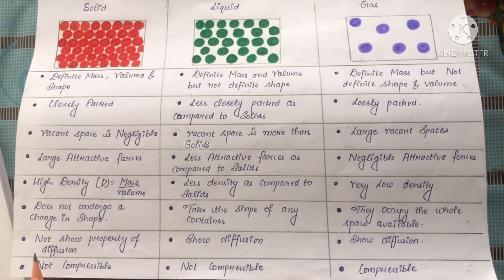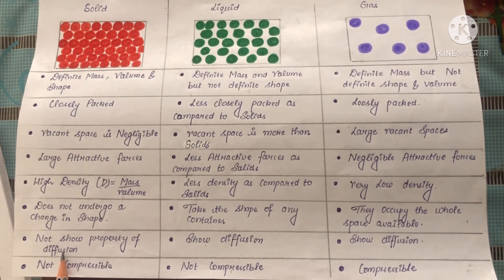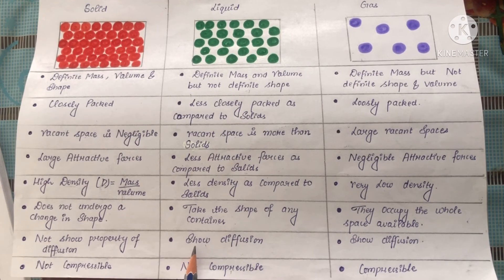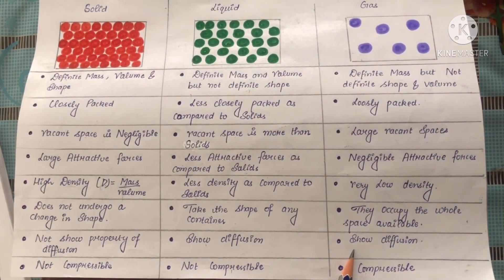Next point is solids do not show the property of diffusion. Diffusion means movement of the particles, or you can say the mixing of the particles. But in case of solids, they do not move, so they do not show the property of diffusion. In case of liquids, the particles move — liquid moves from the higher level to the lower level — so that is why they show diffusion. Gases also show diffusion.